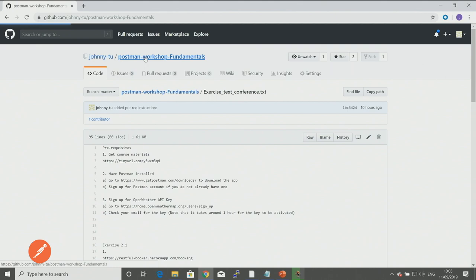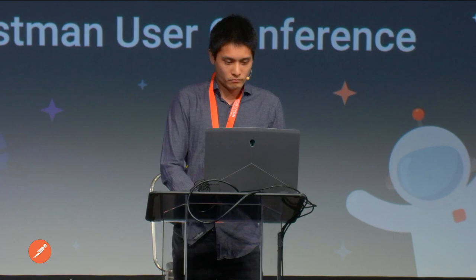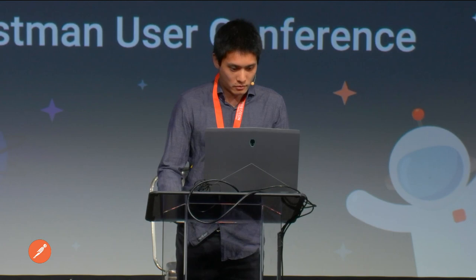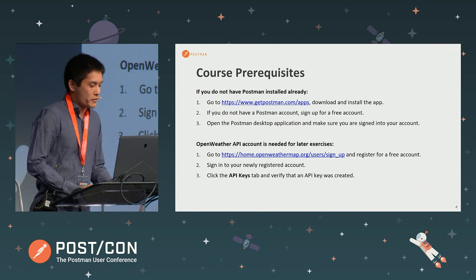You can also get a PDF copy of the slides from the repository. Of course, you'll need Postman installed. If you haven't got that, please go and download and install the app, and then set up the Open Weather API account.